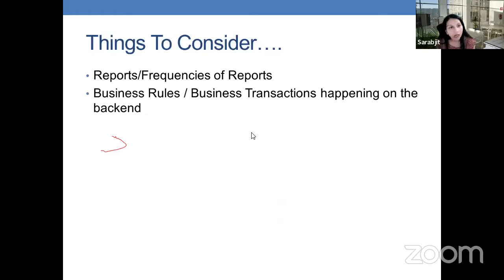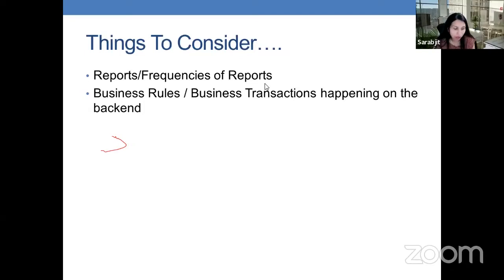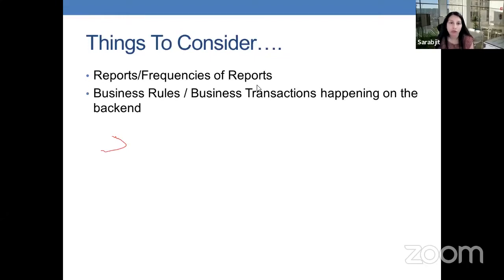Things to consider: reports and frequency of reports. I stress this because it's really important and a lot of people miss it. With older systems that we're trying to move to cloud computing or newer systems, we often forget about the reports that are being run with our source systems, and that can cause lots of issues. Business rules and business transactions happening on the back end are also very important things to consider when working on or planning these projects.